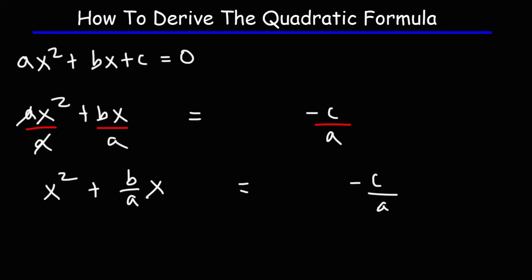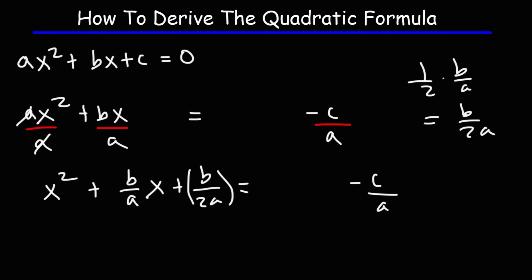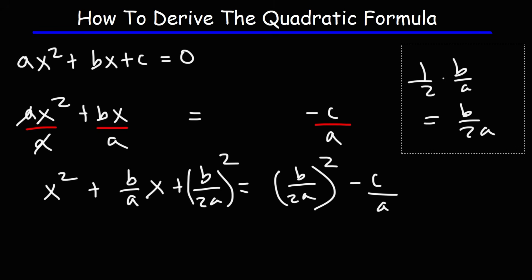Now at this point we need to complete the square. In order to do that we need to take half of the coefficient b over a. One half times b over a is b over 2a. So we're going to add b over 2a squared to both sides of the equation — whatever you do to the left side you must also do to the right side, so that the value on both sides remains the same.